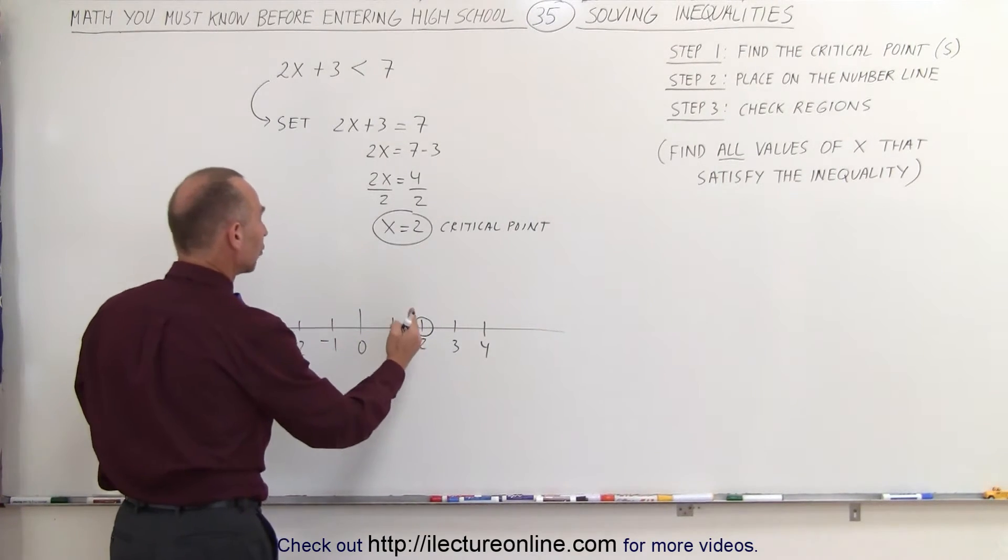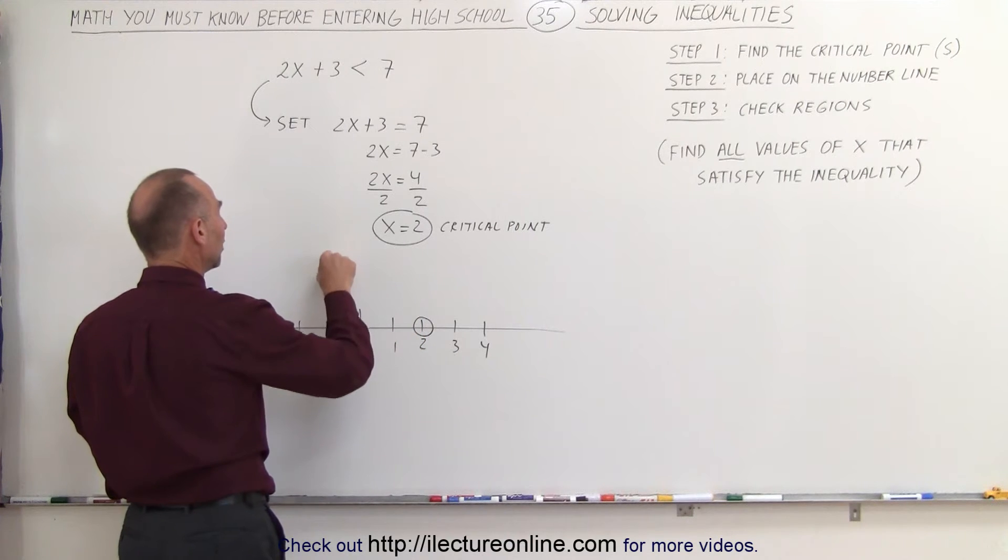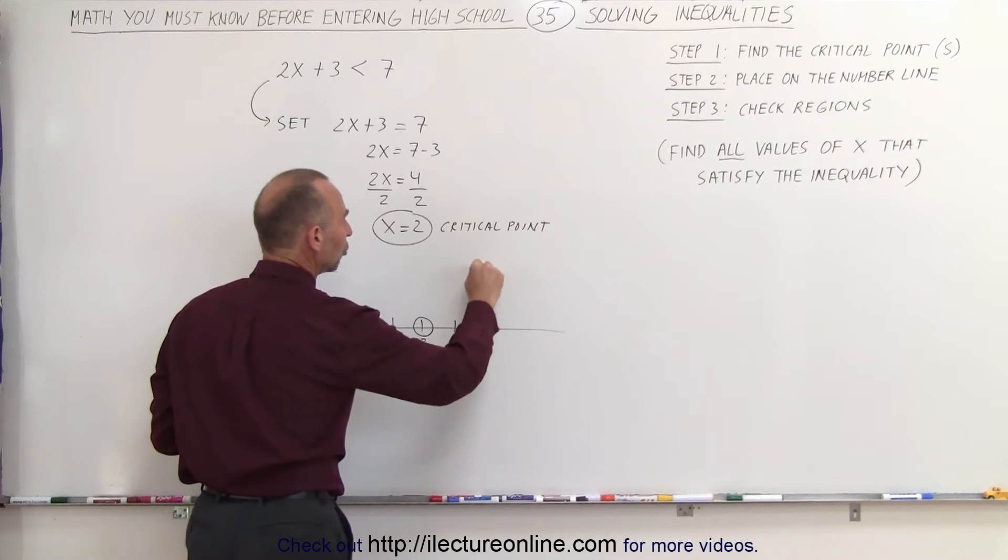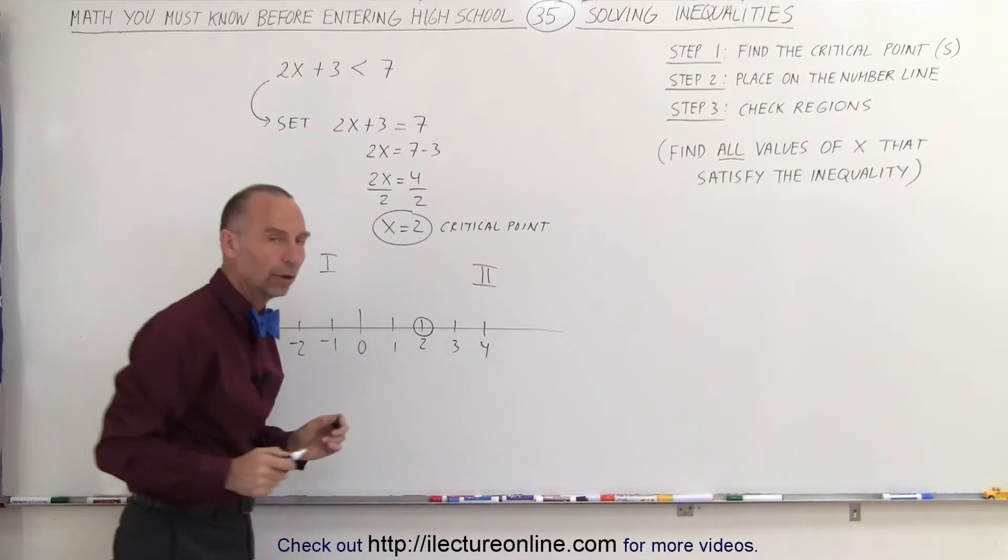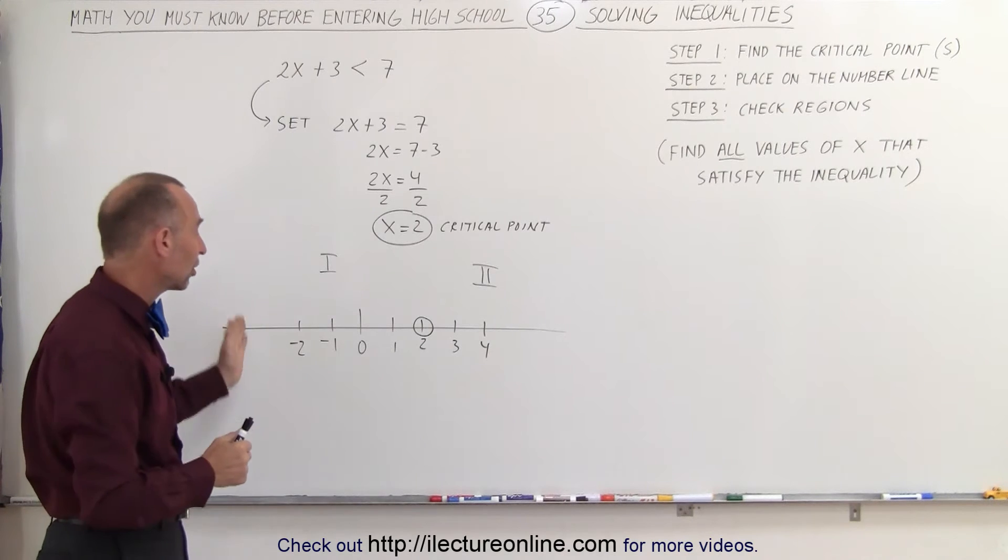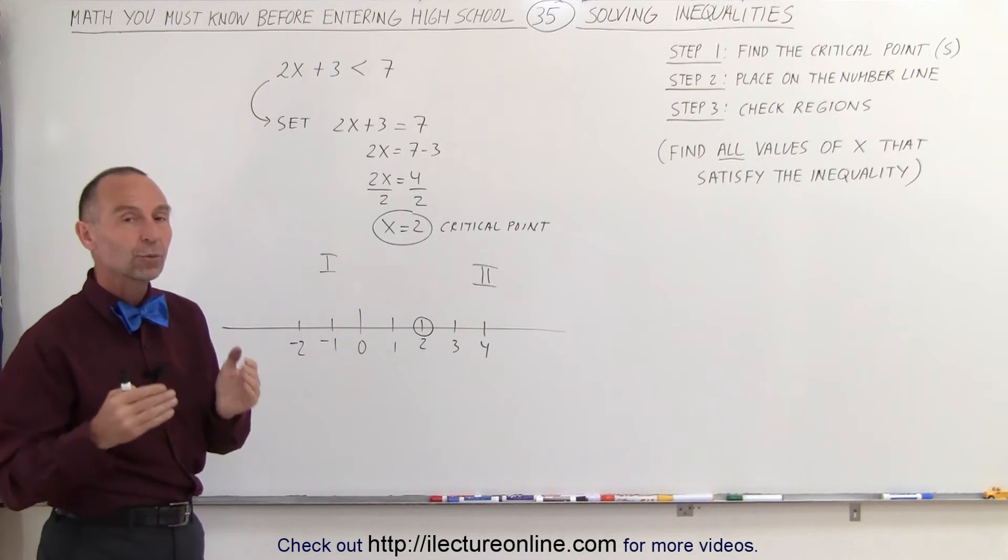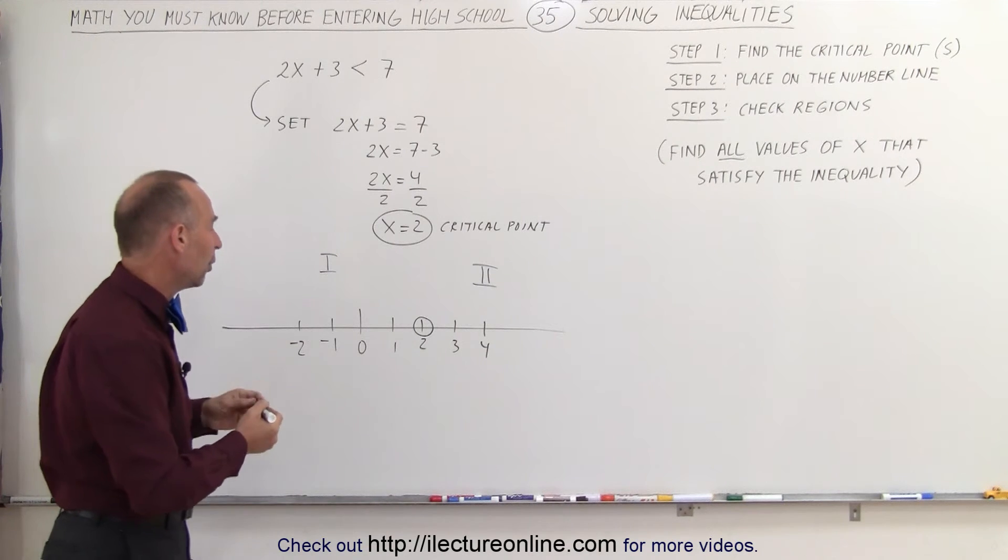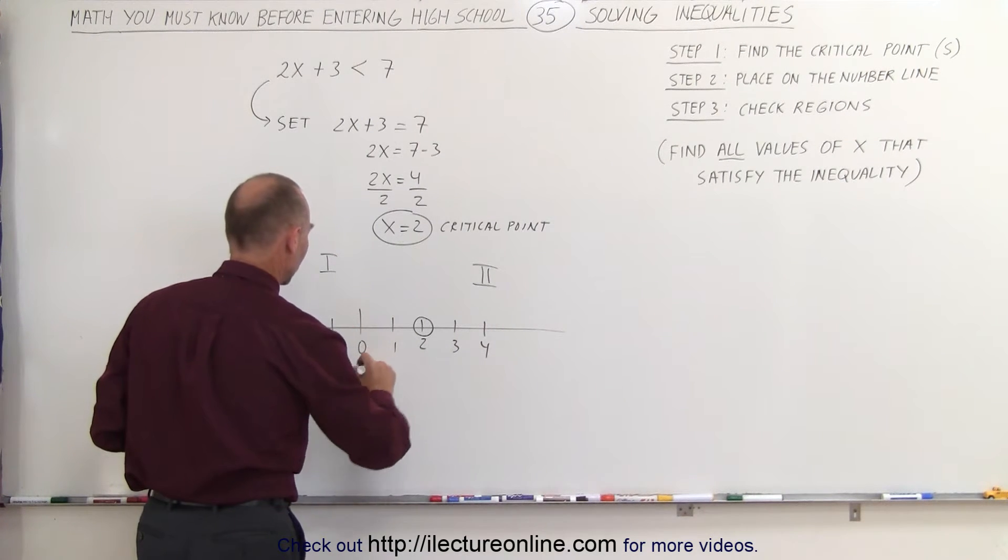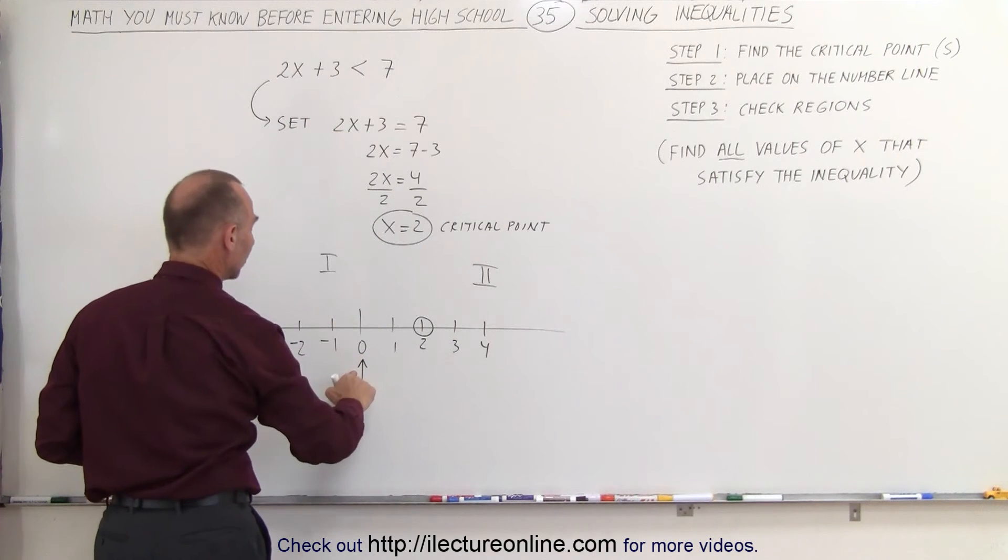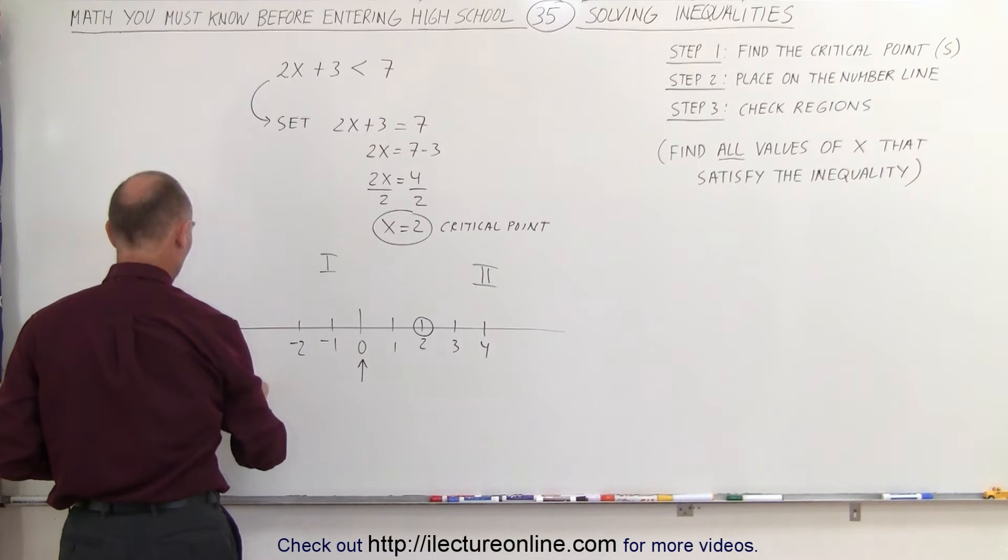But it does divide the number line into two regions. Region number 1 which is to the left of the critical point and region number 2 which is to the right of the critical point. Now the next step is we're going to check the regions. We're going to check each of the regions to see if the region satisfies the inequality. So let's pick a point. We're going to pick the point number 0. So we do a test point and we're going to test that inequality using this test point. So test number 1.